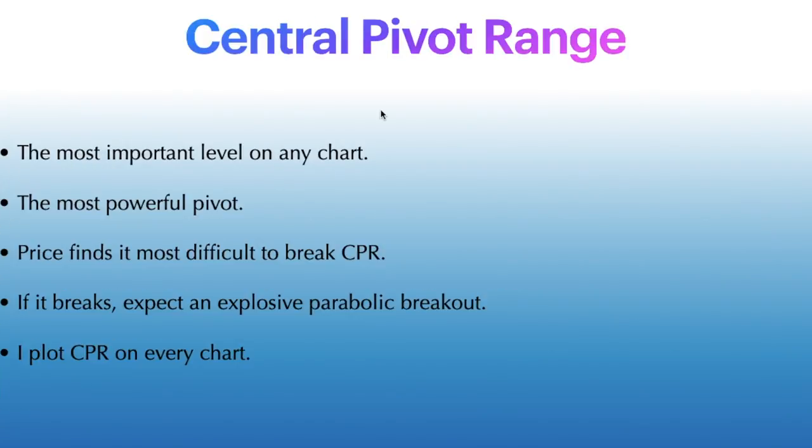CPR is basically a range consisting of the central pivot, the top central pivot called the TC, and the bottom central pivot called the BC. On the whiteboard, you can see three lines — this entire structure is called the CPR.